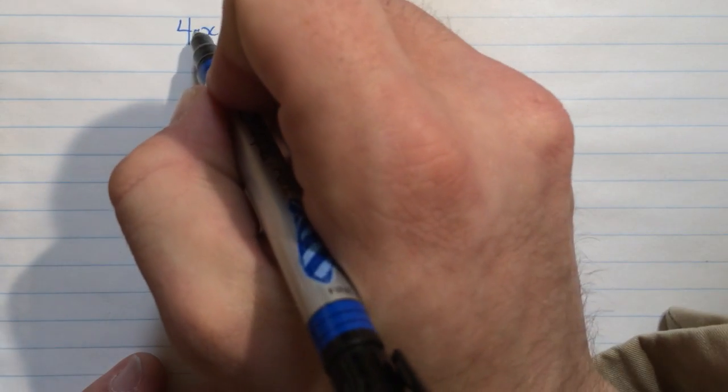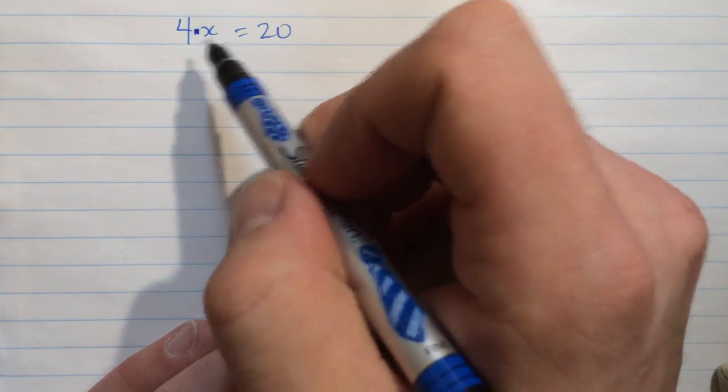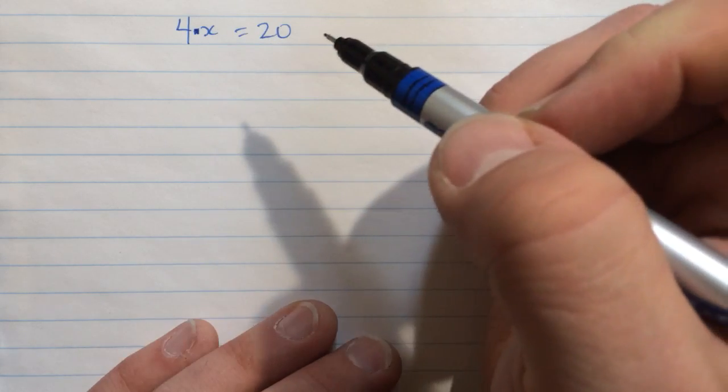Now, what this means here is 4 times x. We don't usually use a multiplication symbol. Sometimes we use a dot to show multiplication, but usually we just have that as a coefficient. This means 4 times x, 4 times this unknown value is 20.